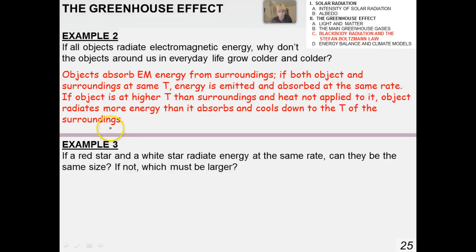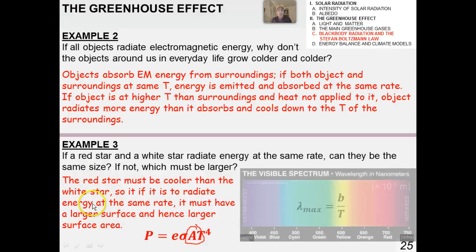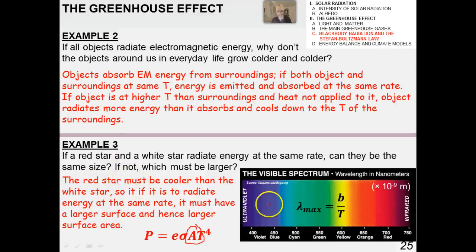Consider a red star and a white star radiating energy at the same rate — can they be the same size? The red star must be cooler than the white star, so if it is to radiate energy at the same rate it must have a larger surface area. Remember, size is the A in the Stefan-Boltzmann law. In this part of the IB course, qualitative answers are really what's being looked for, not so much quantitative ones — although I'll do a few more analytical examples.